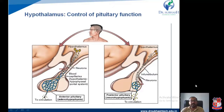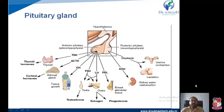The major role here belongs to the nervous system, that is, neurons. Now we can see that individual hormones are released from the anterior lobe and posterior lobe. From the anterior lobe: thyroid-stimulating hormone acting on the thyroid gland, adrenocorticotropic hormone, growth hormone, follicle-stimulating hormone, luteinizing hormone, and prolactin — these are the six hormones released from the anterior pituitary. From the posterior lobe: oxytocin and antidiuretic hormone.